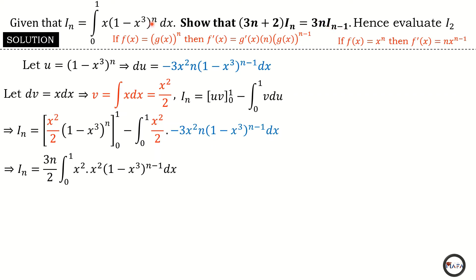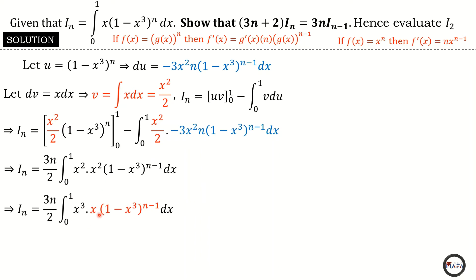Going back to the proof, I see I of n minus one. I know that to get I of n minus one the power n just needs to change to n minus one. I have x squared times x squared and (1 minus x cubed) raised to the power n minus one. To compare with I of n minus one, which is the integral of x times (1 minus x cubed) raised to the power n minus one, I need an x factor. So I extract x from x squared, leaving x cubed, to match the form of I of n minus one.